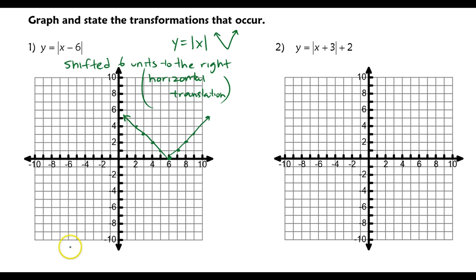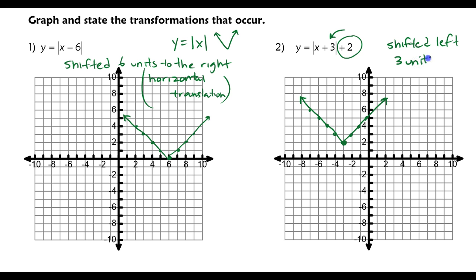Now in graph number two, this is going to shift the graph three units to the left and two units up. So I would have a vertex at negative three, positive two. My v-shape is going to come from there and look like this. So shifted left three units and up two units.